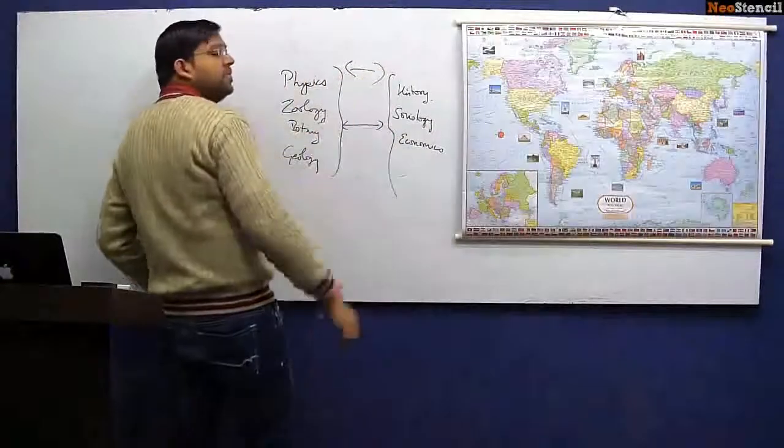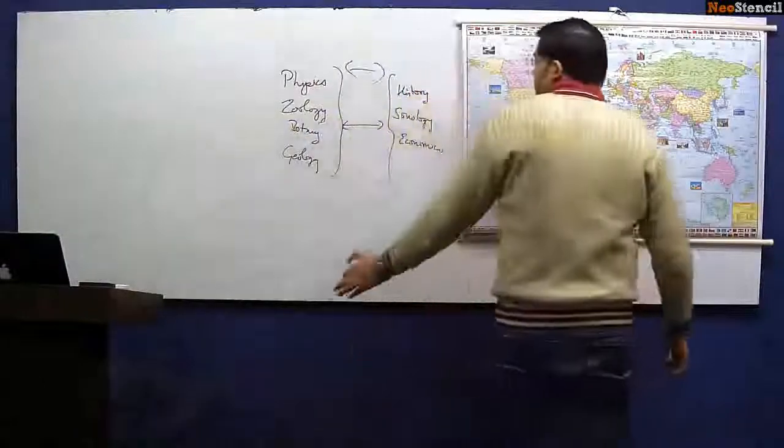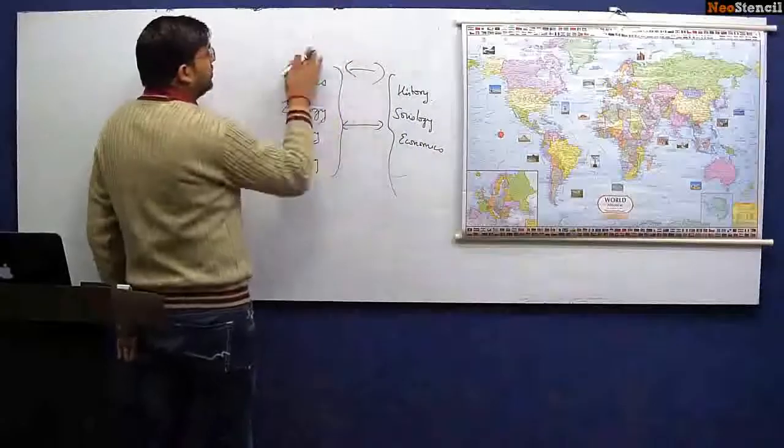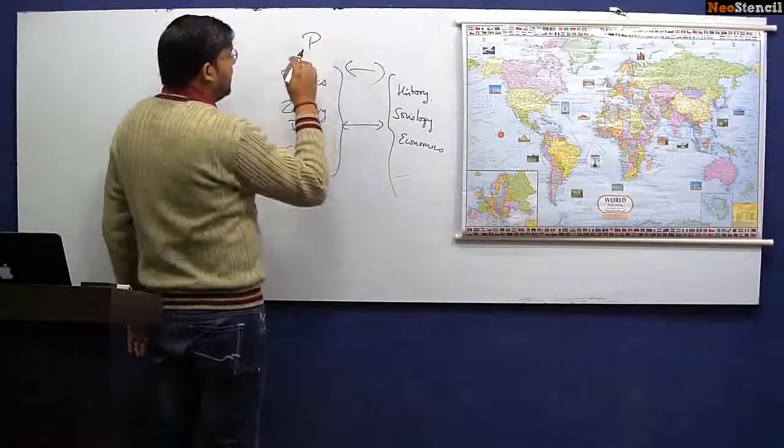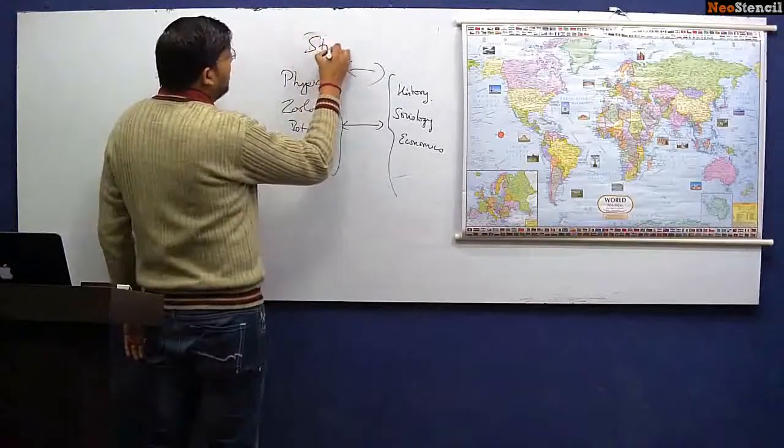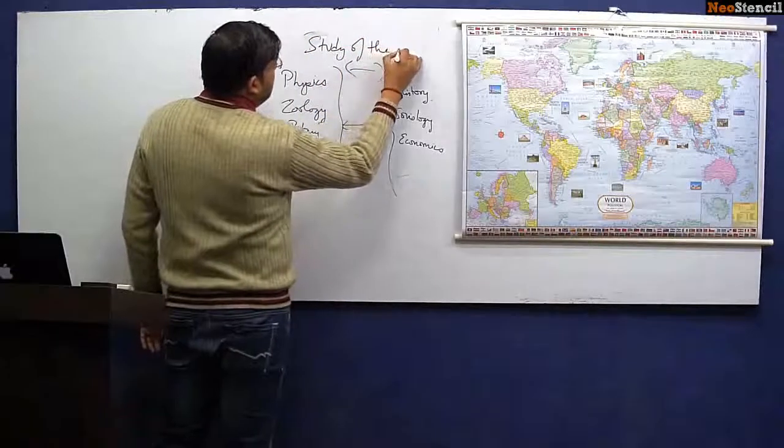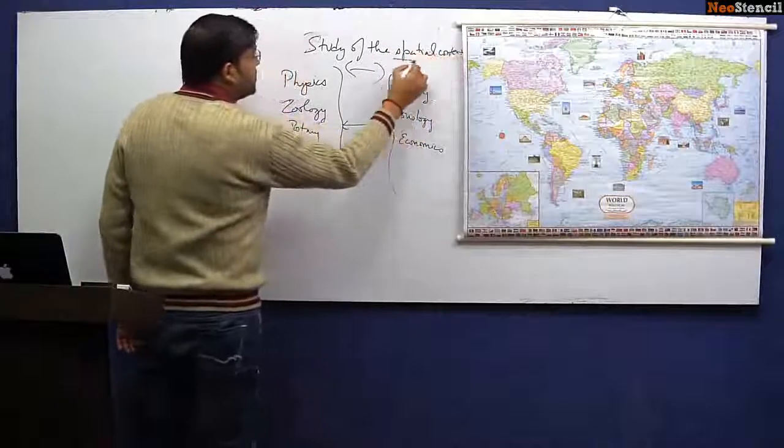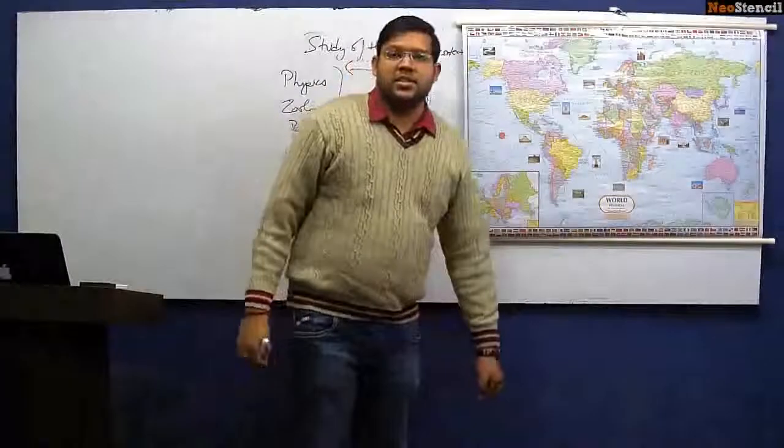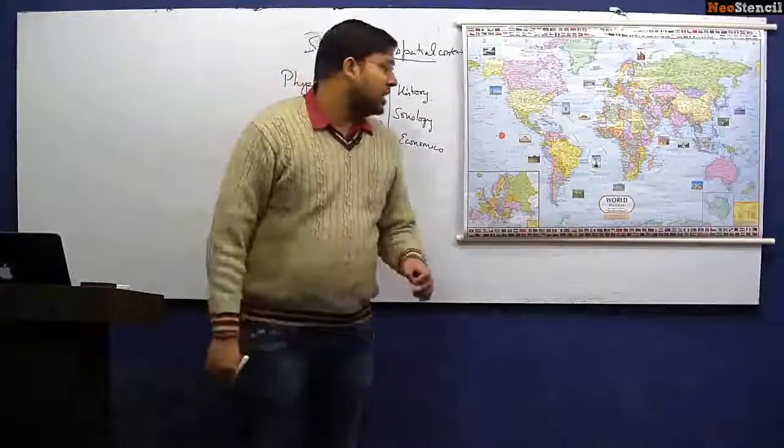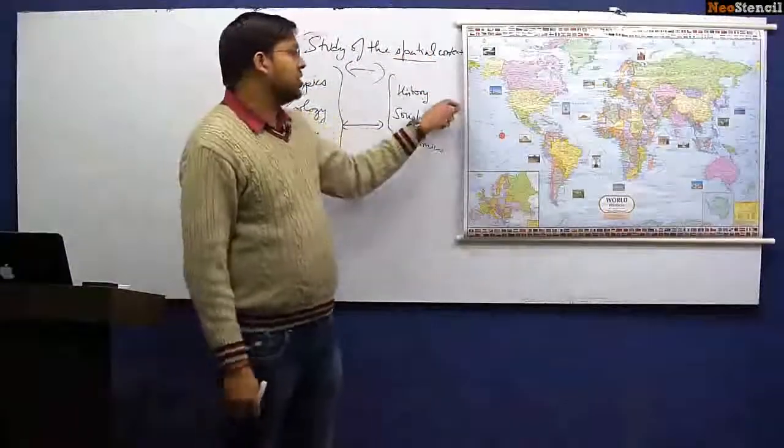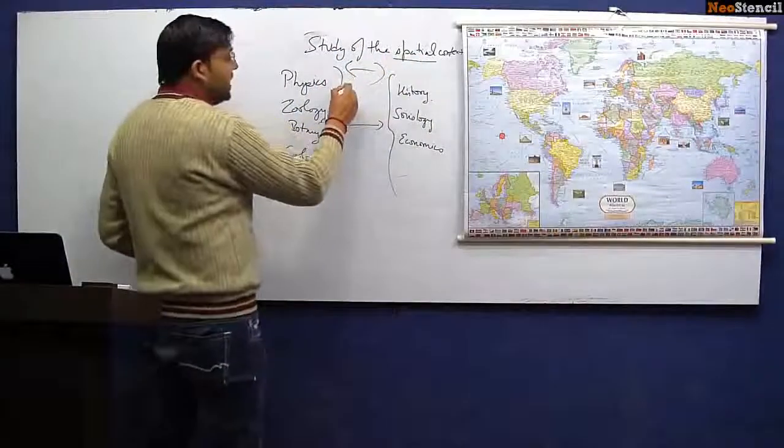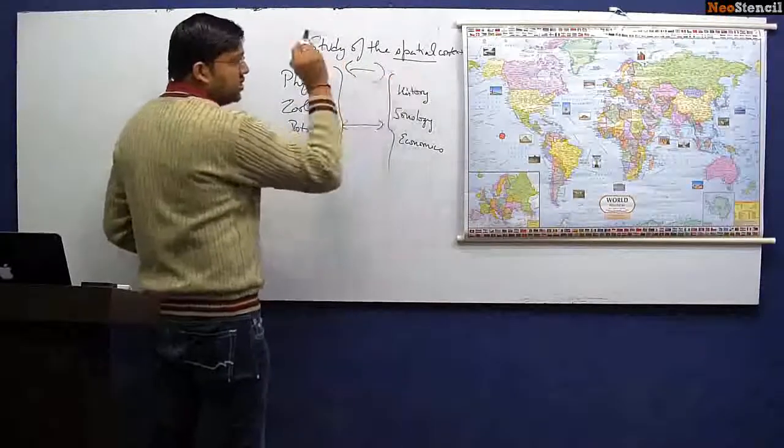Geography is what provides the interlink. It is the study of the spatial context. What do you mean by spatial? Spatial means in space - how things are distributed in space. As you can see, one of the most important tools of a geographer is the map. So it is the study of the spatial context of the interlink between the physical and the social sciences.